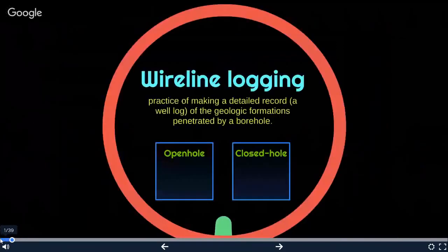Wireline logging is a practice of making a detailed record of the geologic formations penetrated by a borehole. To run wireline logs, the hole is cleaned and stabilized and the drilling equipment extracted. The first logging tool string is then attached to the logging cable and lowered into the hole to its maximum drill depth. The cable attached to the tool acts both as support for the tool and as a canal for data transmission.